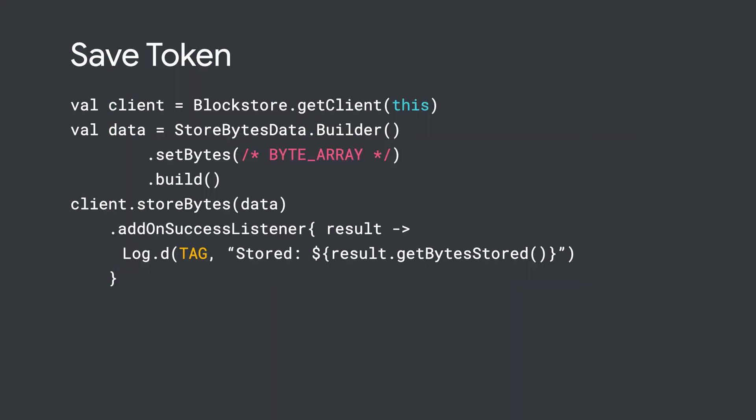Sounds great, right? Let's talk about how to use this API. When a user signs into your app, you can save the authentication token that you generate for that user using Block Store. This is done by calling blockstoreclient.storebytes to store the user's credentials to the source device. After you save the token with Block Store, the token is encrypted and stored locally on the device.